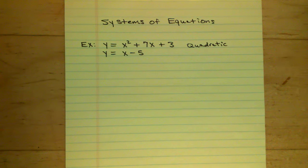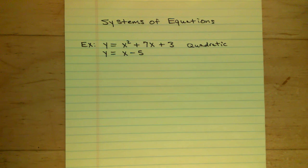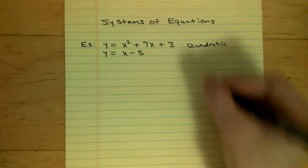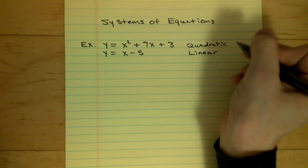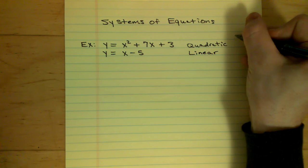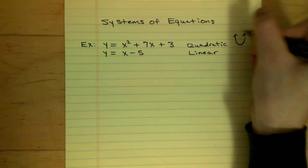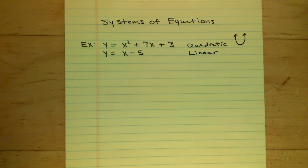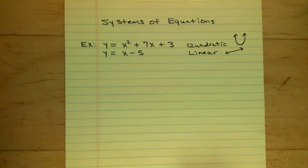Now if you look at the one below it, notice that the highest exponent is not two, but one. This is x to the one power. This is going to be called a linear equation. So when you graph these two equations, the quadratic equation is going to give you a U-shape, which is also known as a parabola. And if you graph the linear equation, you're going to get a line.